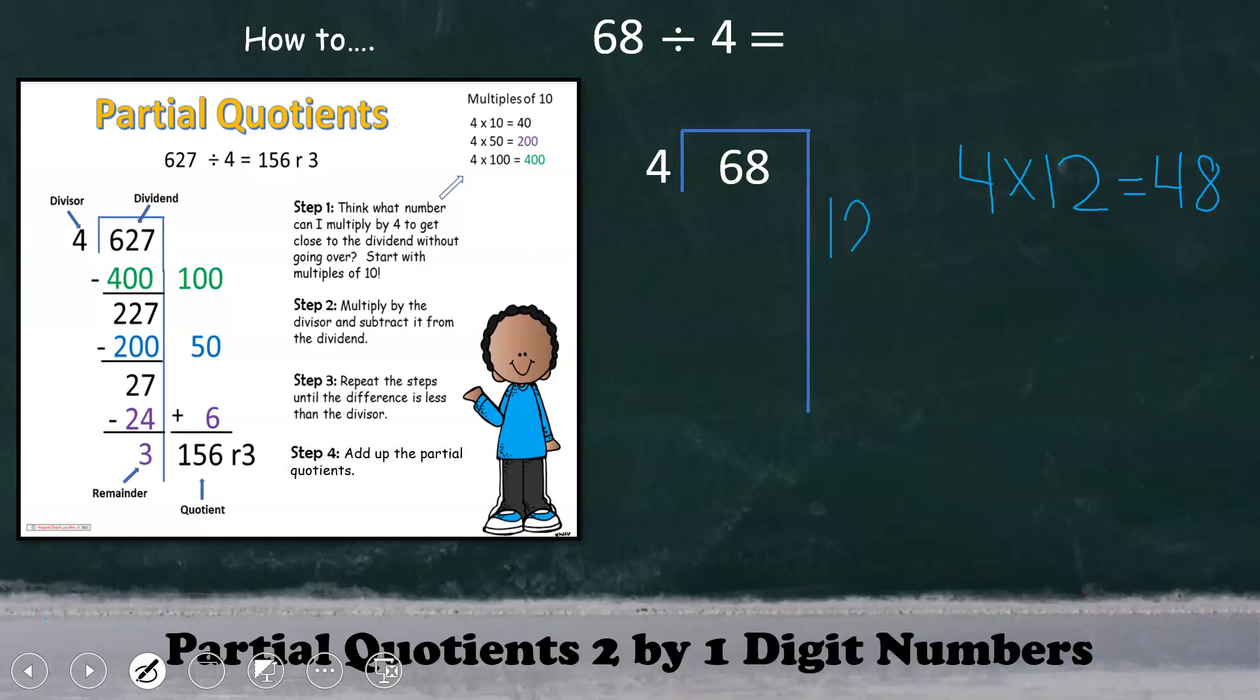We'll write the 12 right here. Then we'll follow with the second step, which is to multiply 12 times 4, which gives us 48 and then subtract, leaving us with a difference of 20. And since we have 20 left over and 20 is greater than our divisor, that signals to us that we must repeat the steps and continue to divide. Once again, thinking to themselves, what times 4 can get them to 20?